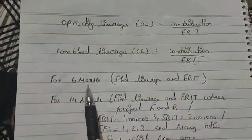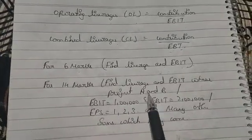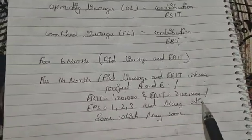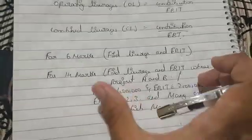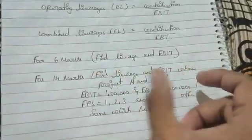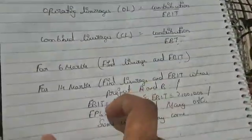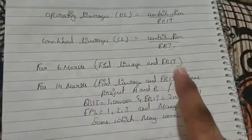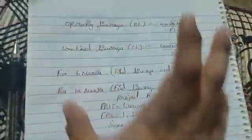For 6 marks: find leverages and EBIT. For 14 marks: find leverages and EBIT where Project A and B are given - EBIT is 1 lakh, EBIT is 2 lakh. Or the question may be: EPS is 1, 2, 3, etc. Questions like 'find the leverages and EBIT' or 'Project A and Project B - which is best?' When EBIT is 1 lakh and 2 lakh, which EPS is better? Or EPS are given, find EBIT. This is the basic of this chapter. We will do sums in different parts so you will understand better and clearly.